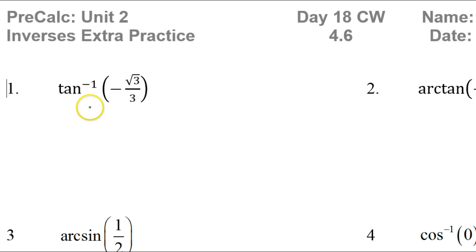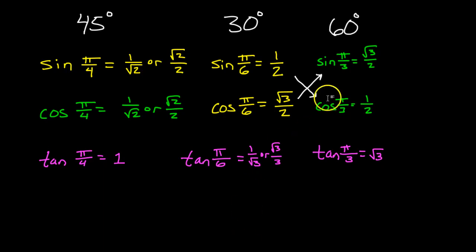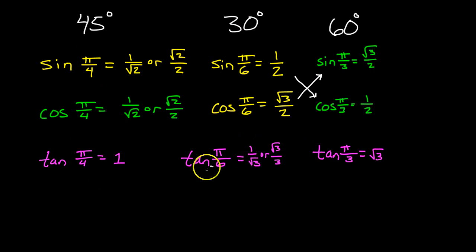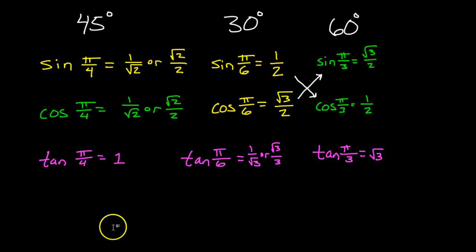This is the angle whose tangent is negative radical 3 over 3. All through this video, I am going to assume that you have memorized the special values on this chart. Make sure you know every single one of these values by heart.